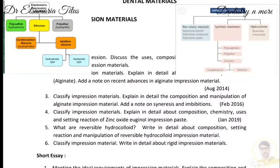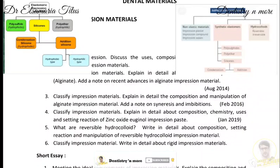We must write both the setting reaction and the chemistry. Coming to addition silicone — also known as polyvinyl silicone or polyvinyl siloxane — it is composed of a base paste and an accelerator paste. The base paste consists of polymethylhydrogen siloxane, other siloxane prepolymers, and fillers. The accelerator paste consists of divinyl polysiloxane, other siloxane prepolymers, platinum salt as catalyst, palladium as hydrogen absorber, retarders, and fillers. The chemistry: vinyl siloxane + hydride siloxane in the presence of platinum salt gives silicone rubber. This is an addition reaction.